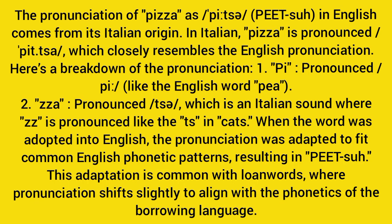How is pizza pronounced? The pronunciation of pizza in English comes from its Italian origin. In Italian, pizza is pronounced 'peet-sa', which closely resembles the English pronunciation. Here is the breakdown: 'pee' pronounced like the English word 'be', and 'za' pronounced like 'tsa', which is an Italian sound where 'zz' is pronounced like the 'ts' in 'cats'.